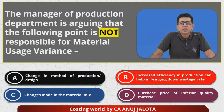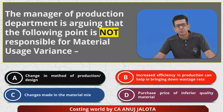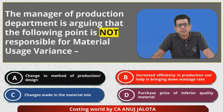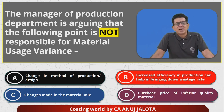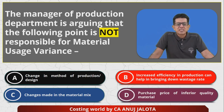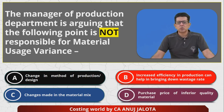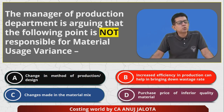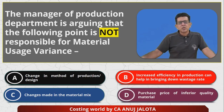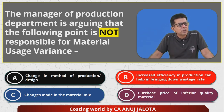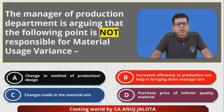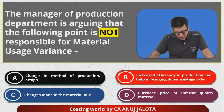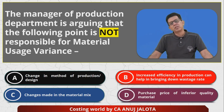Let's look at each option. For option A — change in method of production or design — with technology and passage of time, companies start producing the same goods using lesser material, due to better machines or changes in product design. For example, companies like HP and Canon used to make very large printers consuming a lot of plastic, but over time they started making better printers using less plastic. So A can be a reason for usage variance.